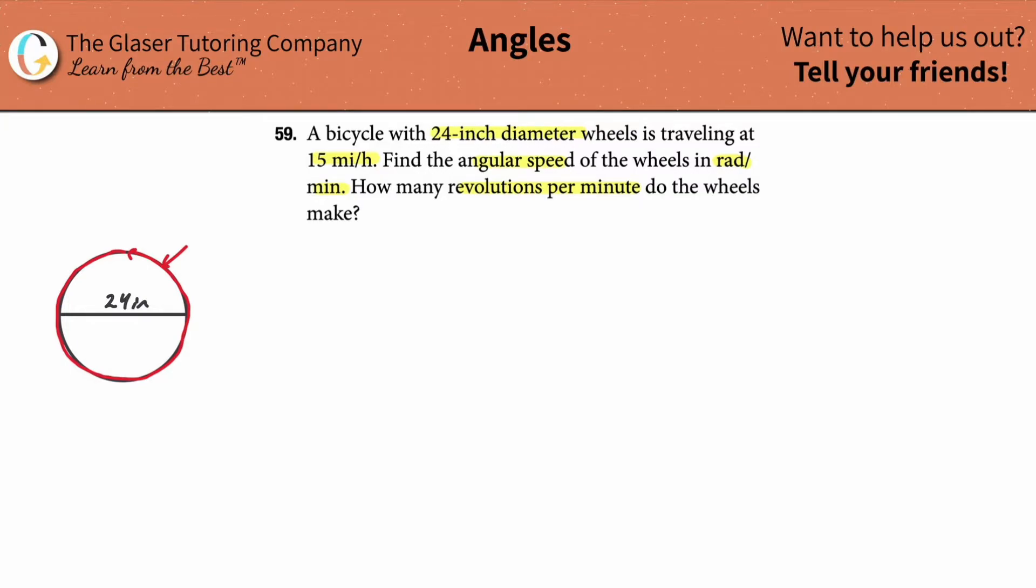In other words, the first step here is going to be to calculate the length of that circumference. So the circumference formula is pi d. So circumference here is going to be equal pi multiplied by the diameter, which is 24 inches. So this is just simply 24 pi inches.